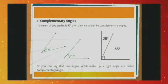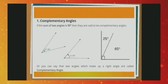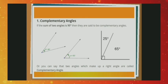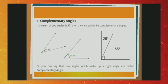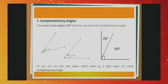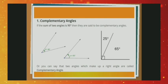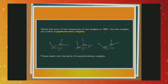Complementary angles: when the sum of the measures of two angles is 90°, the angles are called complementary angles. Are these two angles complementary? Yes, as 40° + 50° = 90°. Whenever two angles are complementary, each angle is said to be the complement of the other. In this figure, the 40° angle is the complement of the 50° angle and vice versa. In the next figure, the 25° angle is the complement of the 65° angle and vice versa.